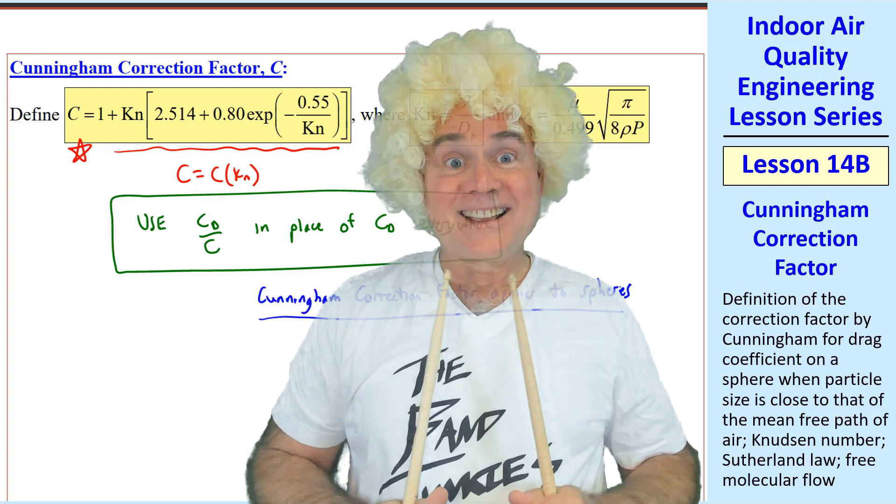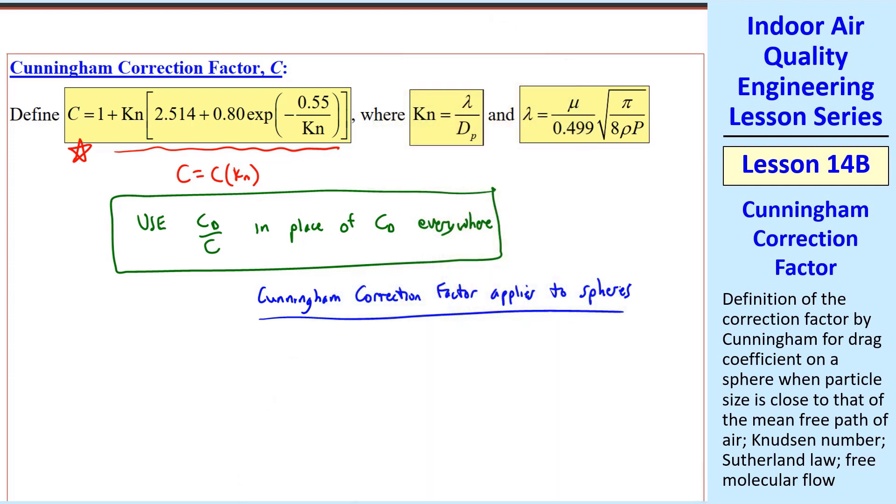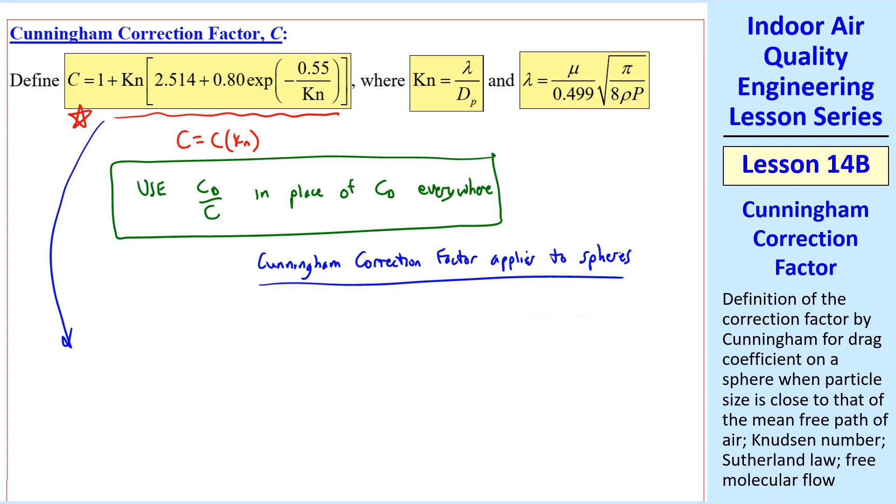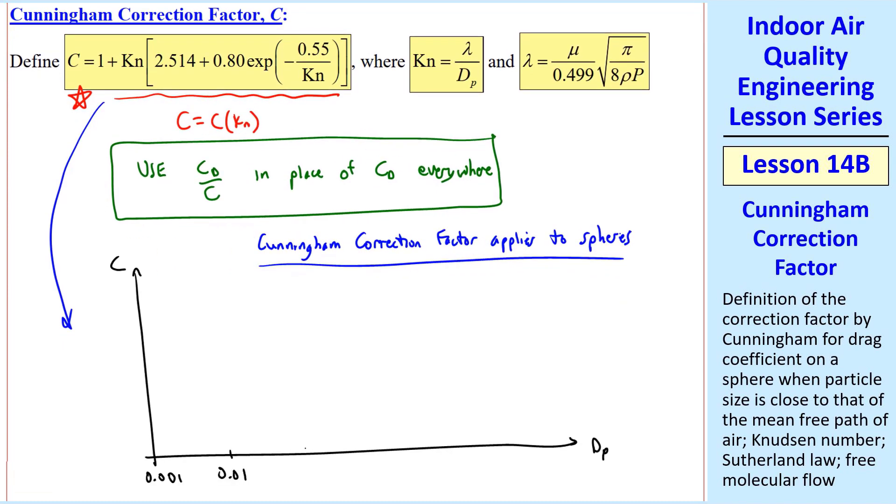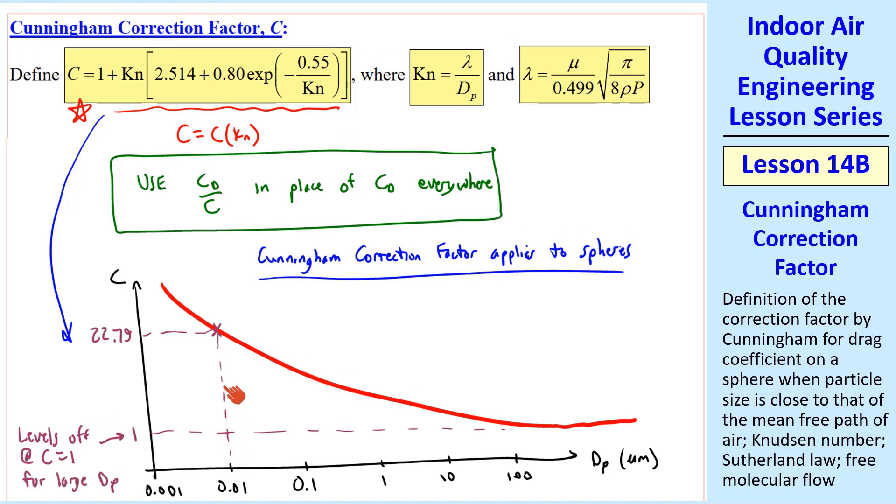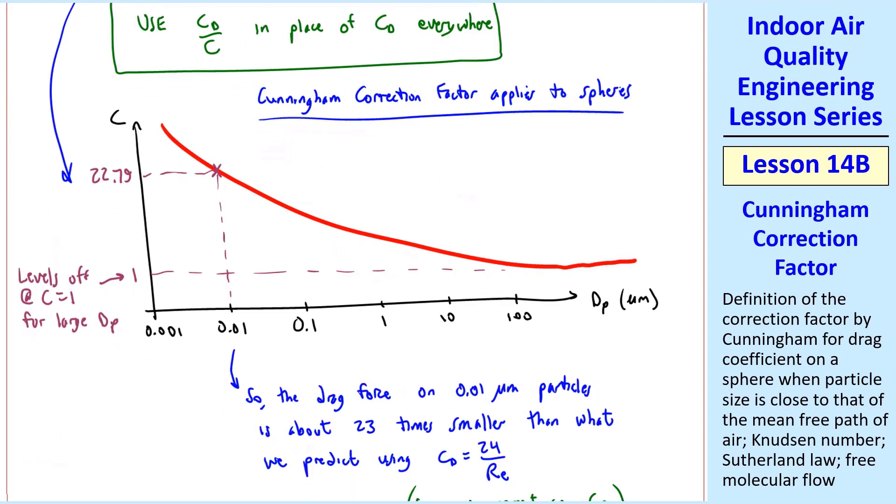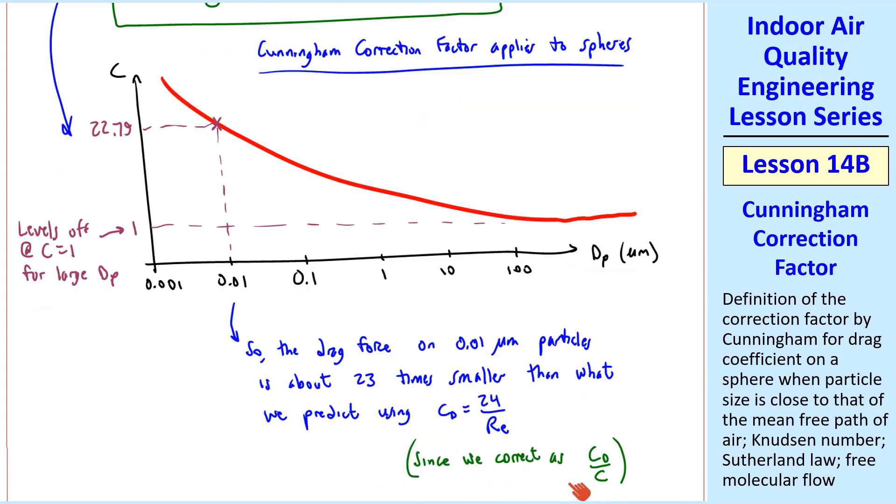Note that the Cunningham correction factor applies to spheres. If we have non-spherical particles, we usually calculate some kind of equivalent spherical diameter so that we can use the Cunningham correction factor and the drag coefficient for a sphere. This is similar to what we did with pipes when we defined a hydraulic diameter. If we plot this equation for C as a function of dp, and I'll use a log scale for particle diameter in microns, by the way C itself is non-dimensional, the curve looks something like this. C decays as dp increases and it levels off at C equal 1 for large dp. For example, at 0.01 microns, C turns out to be about 22.79, which is significant. The drag force on these 0.01 micron particles is about 23 times smaller than what we predict using cd equal 24 over Reynolds number, since we correct cd as cd over C instead and this factor appears in the denominator.